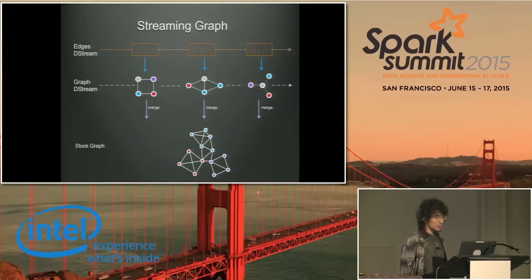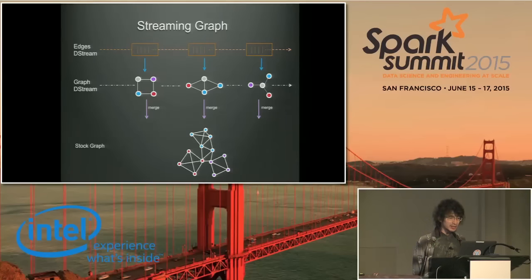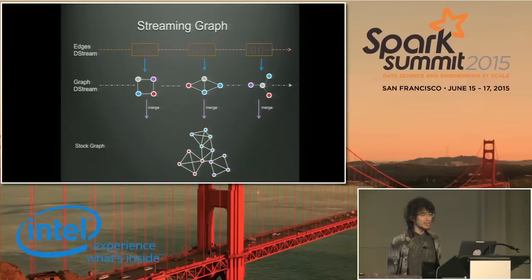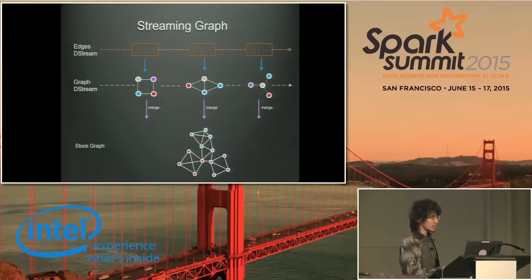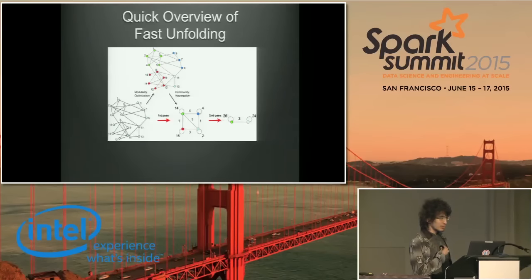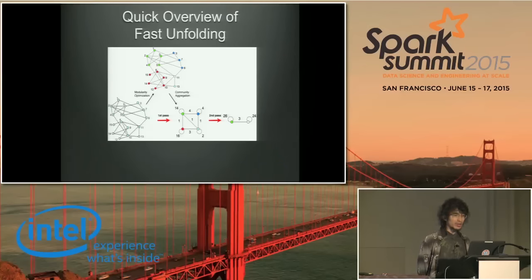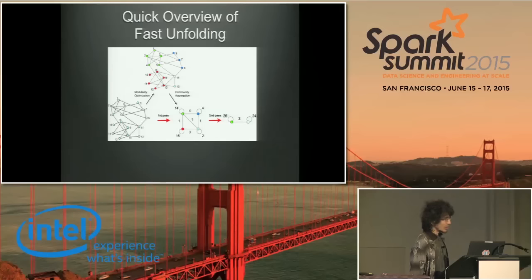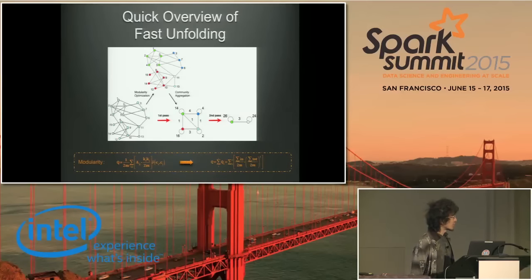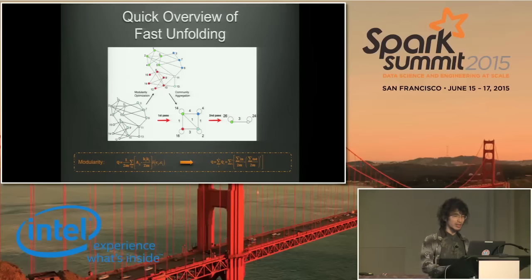The basic idea to combine these two models is simple. Most data will come and be transformed into edges with strengths, and then formed into a small graph. Finally, the small graph will be merged into the stock graph with topology updates and logical community changes. Now let's talk about models and algorithms. First, let's have a quick overview of the fast unfolding algorithm. We choose to use this algorithm for its simplicity and speed on large datasets. The core formula is the modularity, and we simplified it so it can be run in parallel and incrementally — which is very important, and I'll talk about this later.